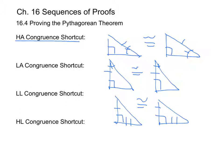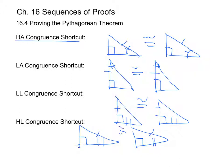Then we have the HL congruence shortcut, which says that if the hypotenuse and one leg of a right triangle are congruent to the hypotenuse and a leg of a second right triangle, then the two right triangles are congruent. So if we have two right triangles and we're given the hypotenuse and a leg, we can say that they're congruent.